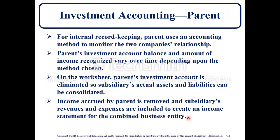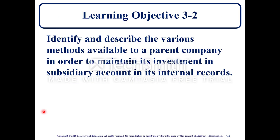For internal record keeping, the parent uses an accounting method to monitor the company's relationship. The parent's investment account balance and amount of income recognized vary over time depending on the method used. On the worksheet, the parent's investment account is eliminated so the subsidiary's actual assets and liabilities can be consolidated. Income accrued by the parent is removed and the subsidiary's revenues and expenses are included to create an income statement for the combined business entity. Learning objective 3-2: identify and describe the various methods available to a parent company to maintain its investment in the subsidiary account in its internal records.